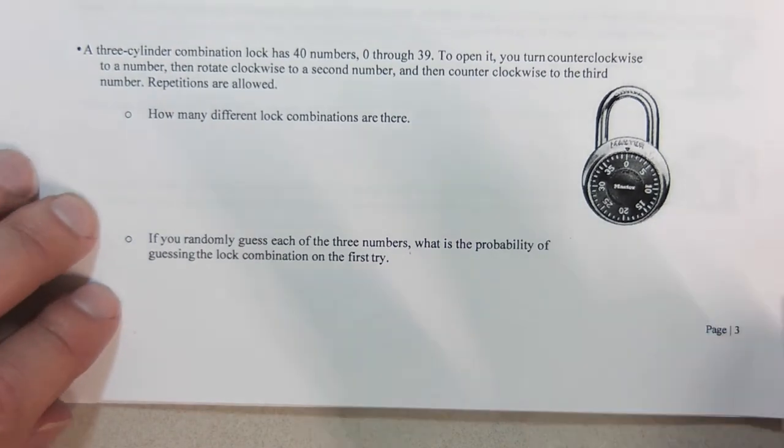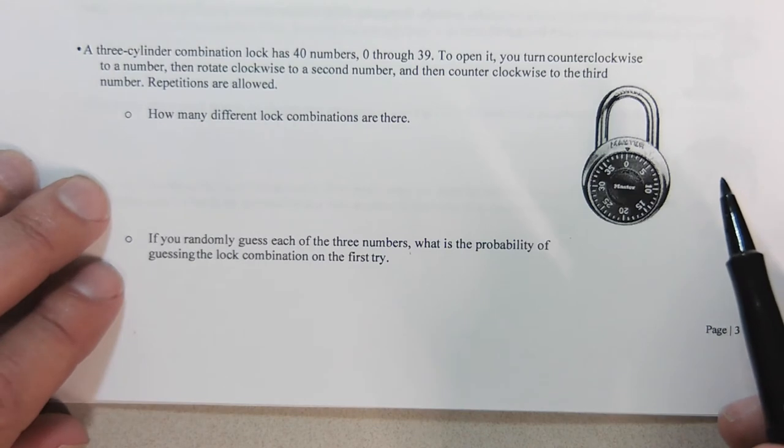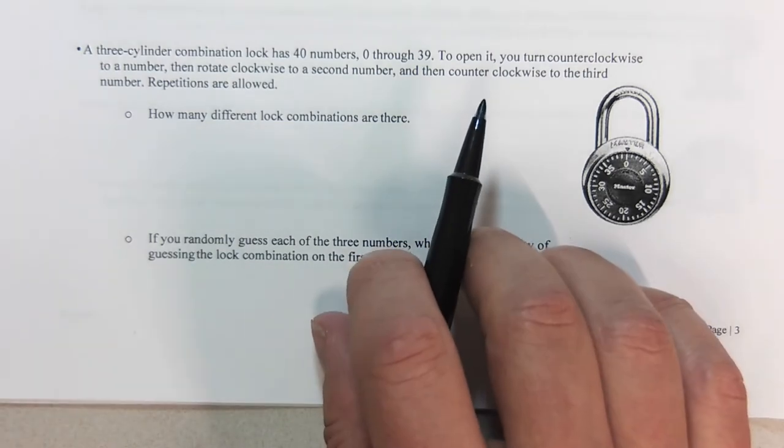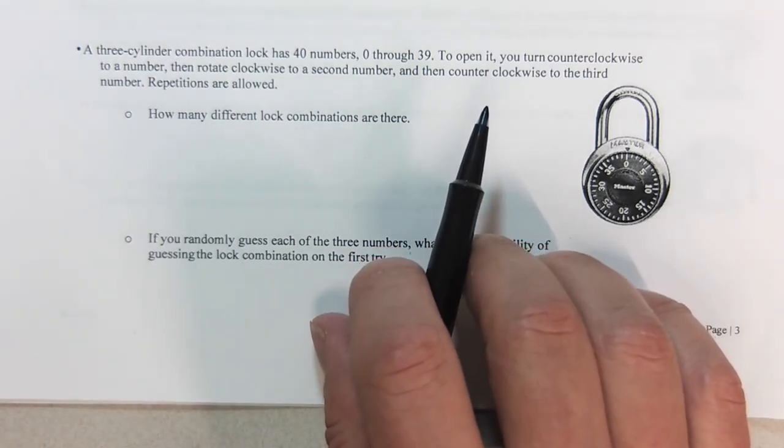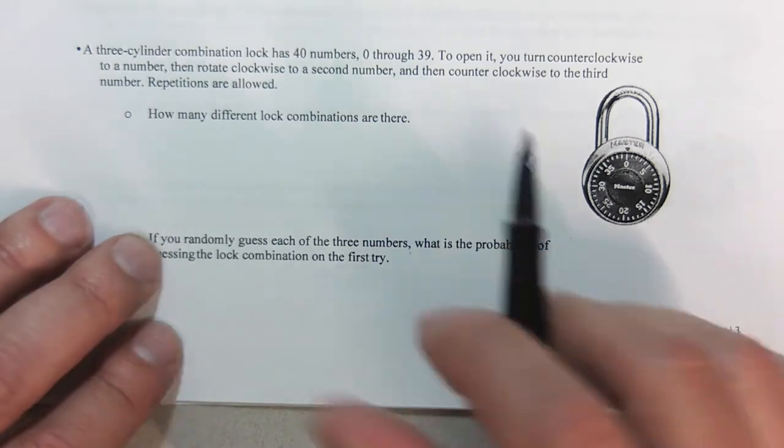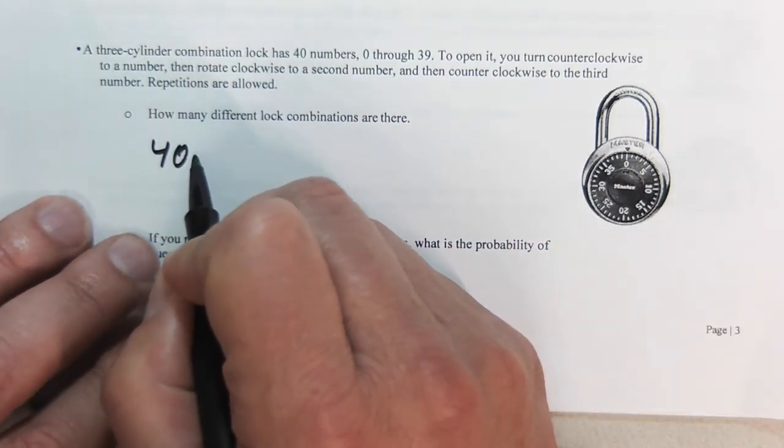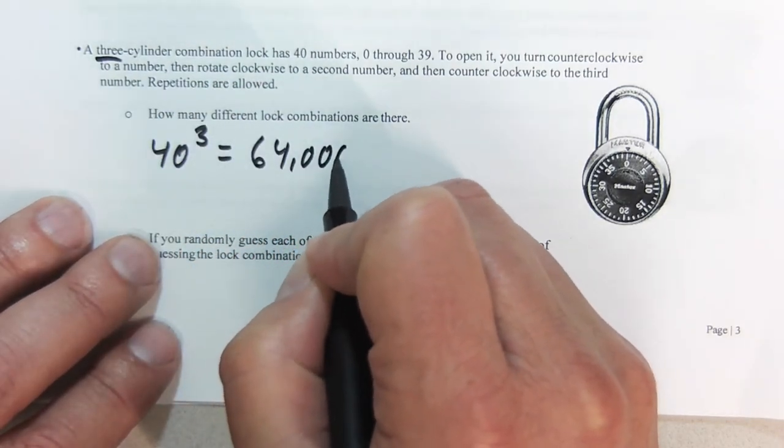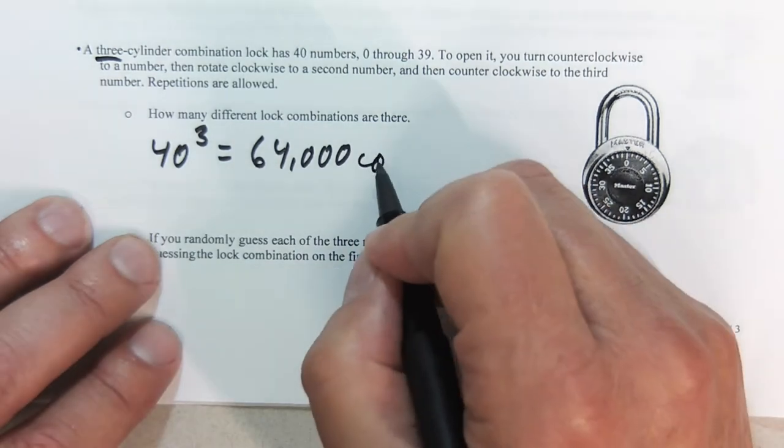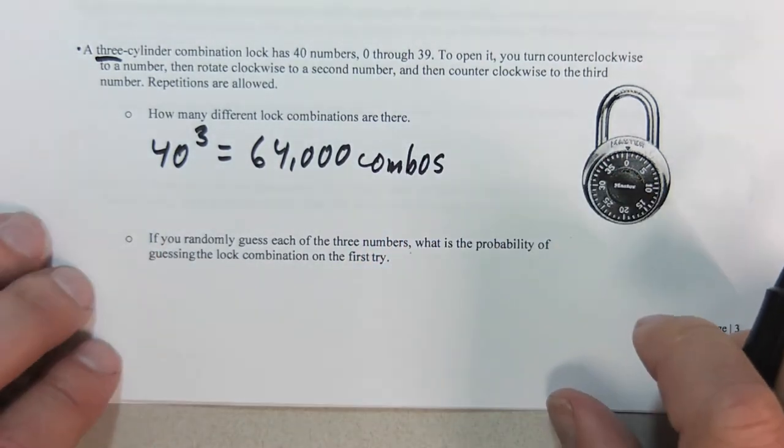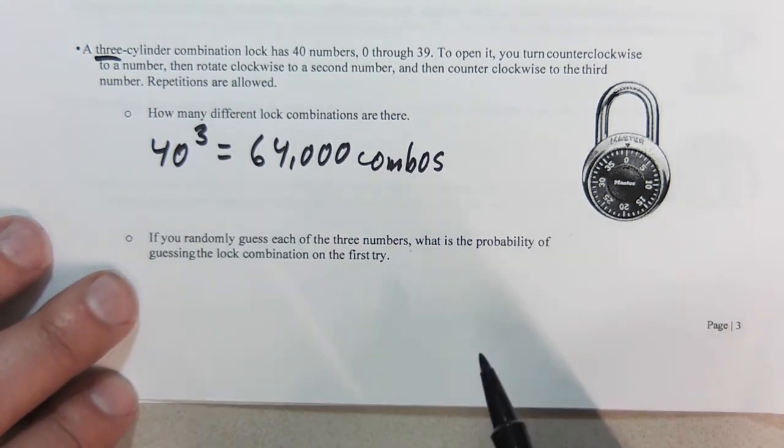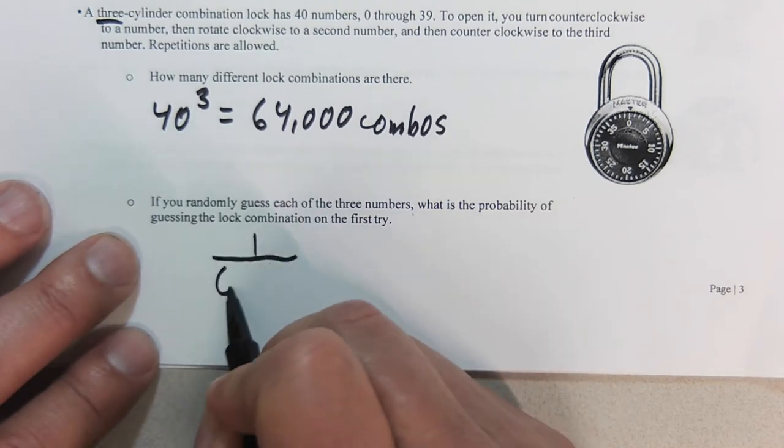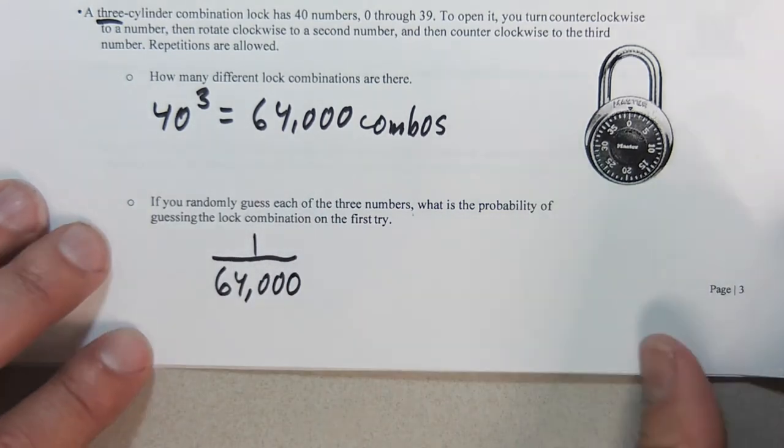A few more. We have a three-cylinder combination lock with 40. If you've ever had one of these, you know how they work. You turn to the right, then the left, then the right. What we're going to do here is we're going to have 40 choices for each one, and there's three cylinders, giving us 64,000 combinations. If you randomly guess each of these three numbers, what's the probability of guessing it? That's going to be one chance out of 64,000. This is what we call a very low probability.